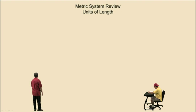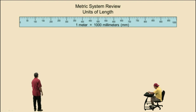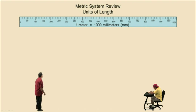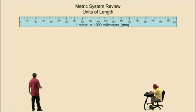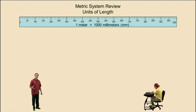Metric system review — units of length. Here is a meter stick. Remember, a meter is slightly larger than a yard. There are 1,000 millimeters in one meter. Milli means one one-thousandth of, therefore there are 1,000 millimeters in one meter.